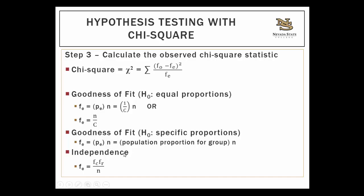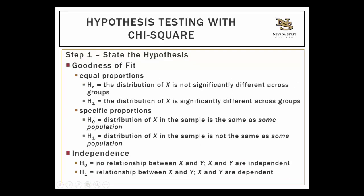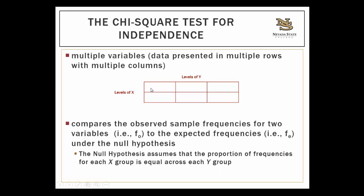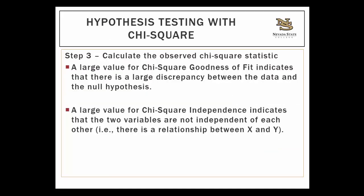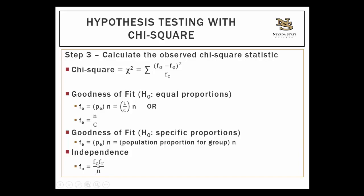For the chi-square test of independence, to find the expected frequencies you take the frequency of the row times the frequency of the column divided by the sample size. FC stands for the frequency for the column associated with that group, FR stands for the frequency for the row associated with that group, and N is the sample size.